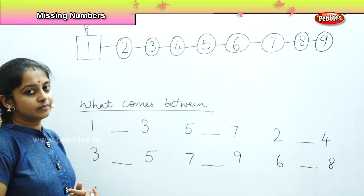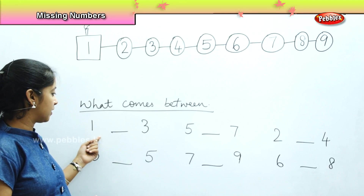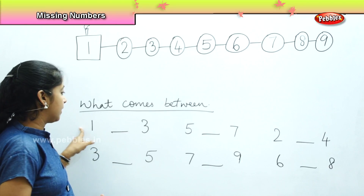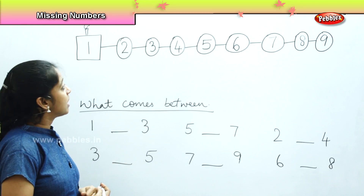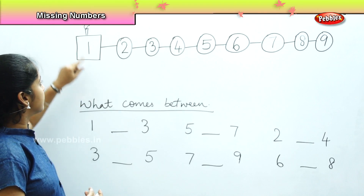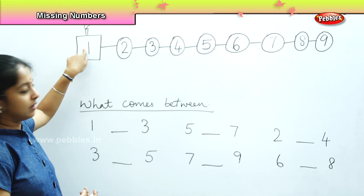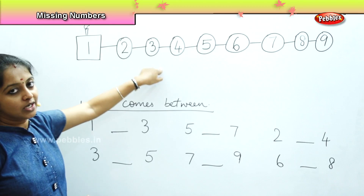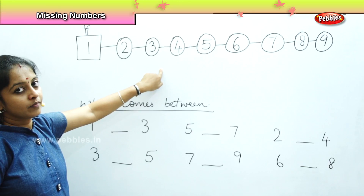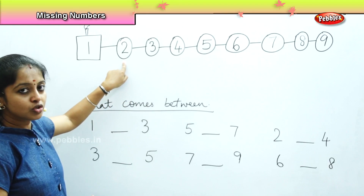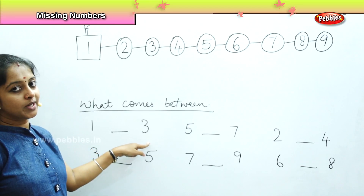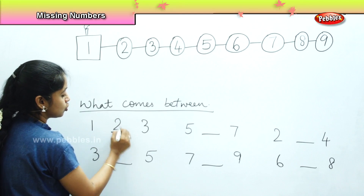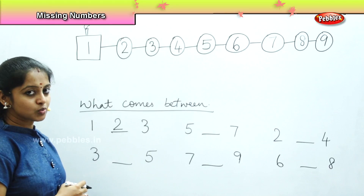Now what is the first question? I want a number which comes in between 1 and 3. Shall we look at the engine? I have number 1 here and I have number 3 here. So what is the number which came between 1 and 3? It is number 2.